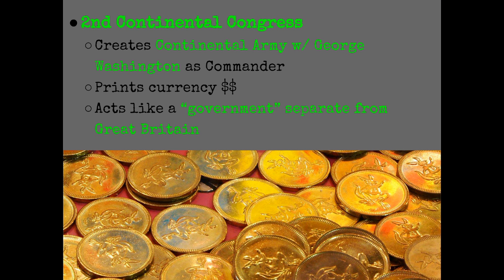Then we come to the Second Continental Congress, and they created an official Continental Army. George Washington is named commander, even though the conflict was kind of simmering in the Massachusetts colony and he was from Virginia. This is also a good unifying idea — to create a whole army of all the colonies. They also start to print money for the first time and act like a government separate from Great Britain.